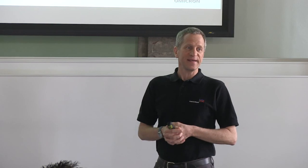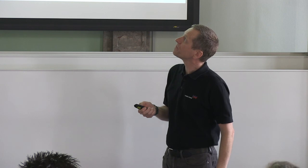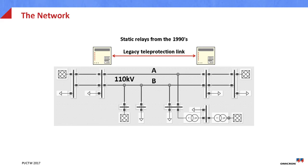Now let's look into a case where these principles were really applied. It is a 110 kV system — not a very large system — spanning over 20 to 25 kilometers. It was upgraded in requirements, and with that upgrade came a new protection system, along with an independent upgrade of the IT system. This IT upgrade could be used with great benefit for the whole system, so a GOOSE-based system was set up for teleprotection.